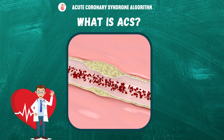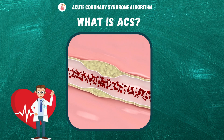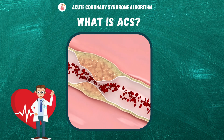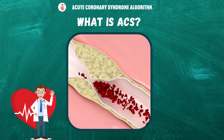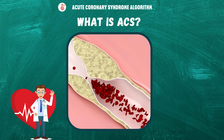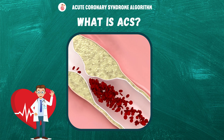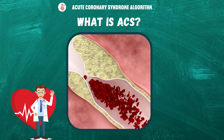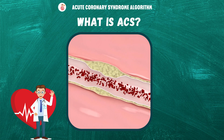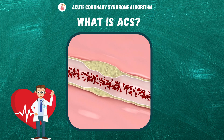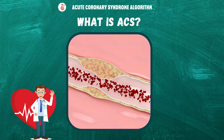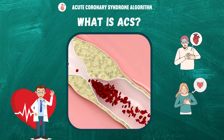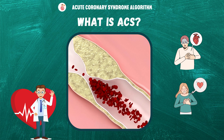Acute coronary syndrome is caused by the buildup of plaque in the coronary arteries, which supply blood to the heart muscle. Plaque is a mixture of fat, cholesterol, and other substances that can build up in the walls of the arteries over time. When plaque ruptures, it can cause a blood clot to form, which can block blood flow to the heart muscle, leading to a heart attack or unstable angina.